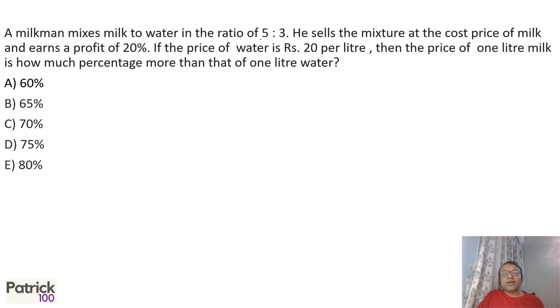A milkman mixes milk and water in a ratio of 5 to 3. He sells the mixture at the cost price of milk and earns a 20% profit, and the price of water is 20 per liter. Since the answer is in percentage, this value may not be important. Since the profit is 20%, let me assume the total cost is 100 and total sale is 120. And let me assume 5 liters and 3 liters, so total 8 liters.